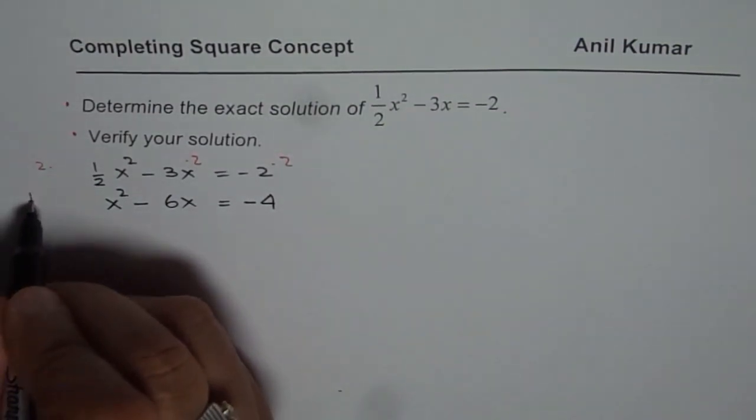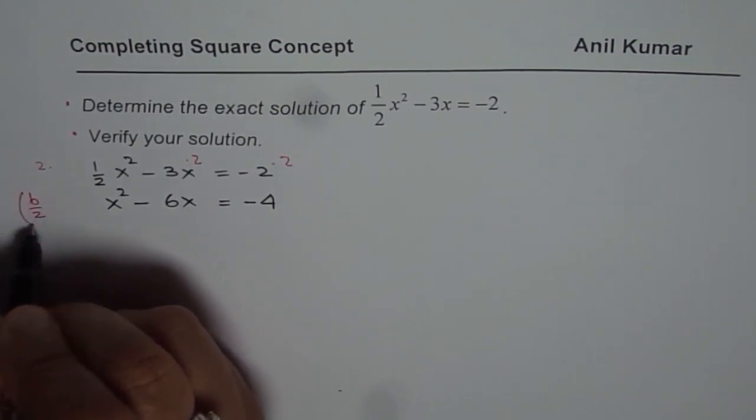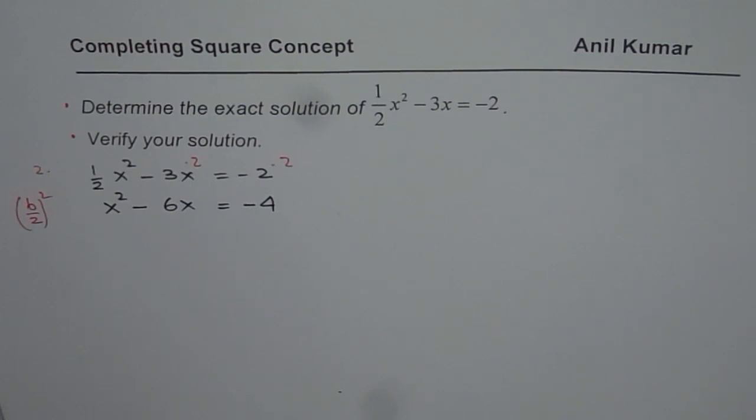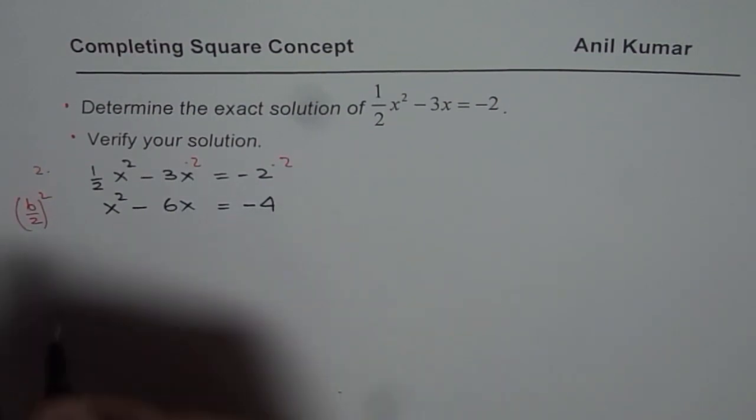So we need to add half of 6, let me say 6 over 2 square. 6 over 2 is 3, 3 square is 9. That means I need to add 9 on both sides.